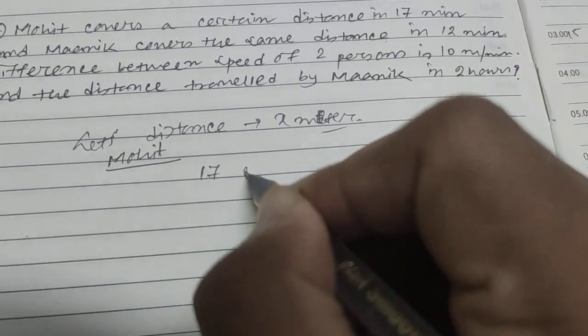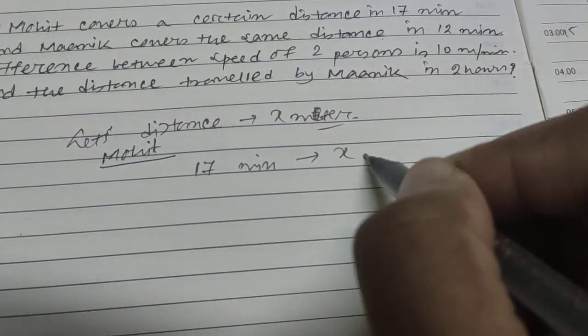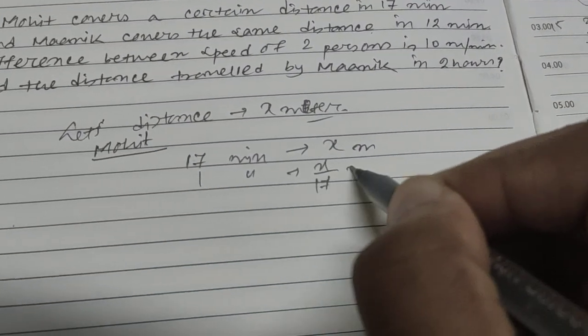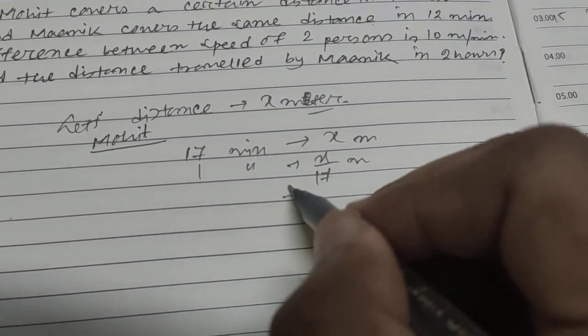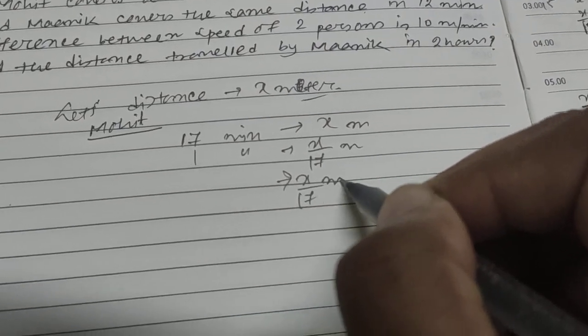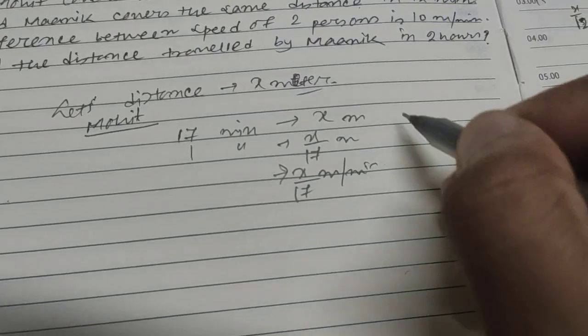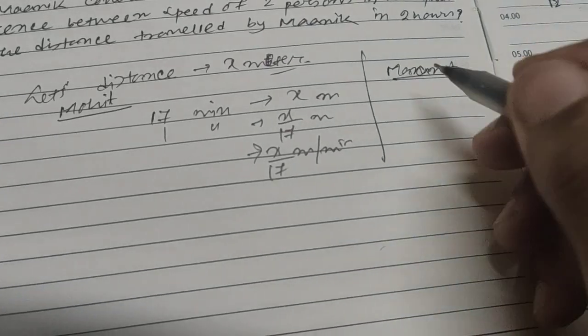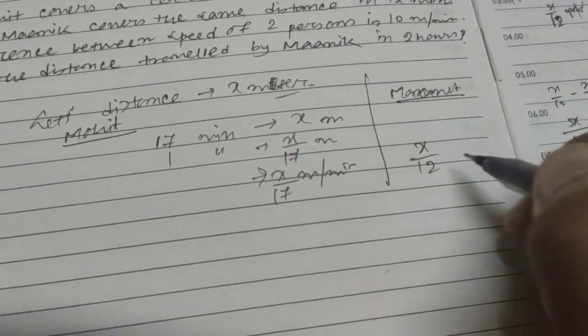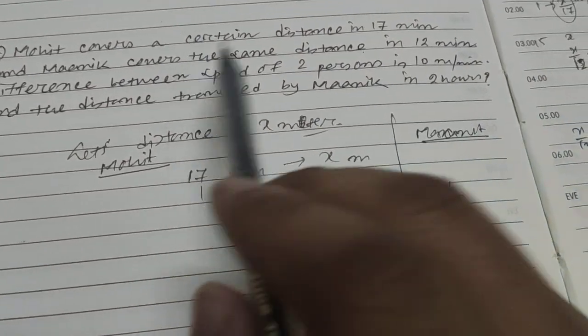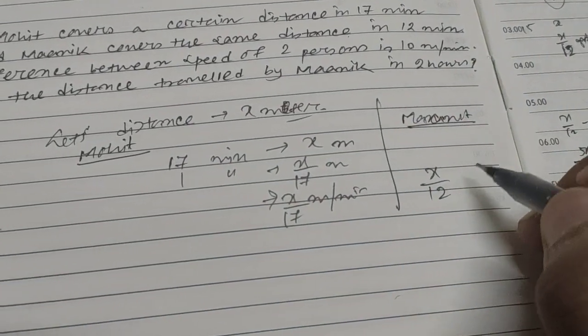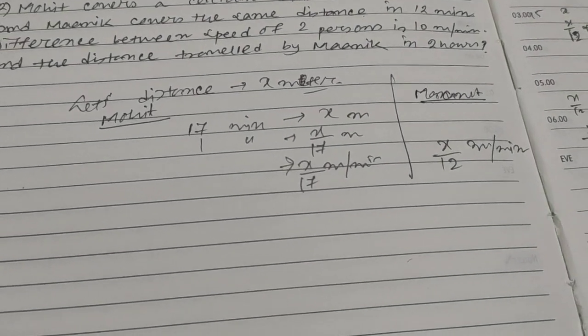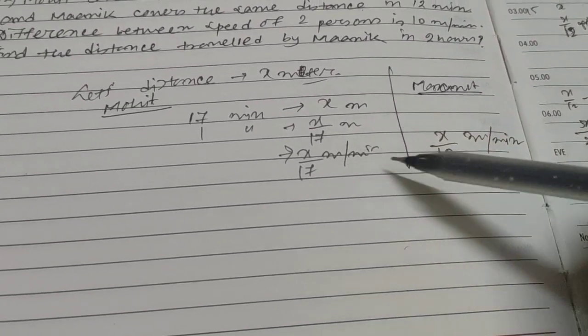In 17 minutes he traveled x meters, so in one minute x by 17 meters. His speed is x by 17 meters per minute. In the same way, for Manik his speed is x by 12, as he covered the same distance in 12 minutes, so x by 12 meters per minute. Between these, which is larger? Obviously x by 12.